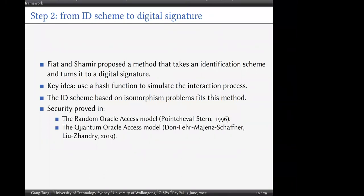That's the GMW protocol as our identification scheme. We then apply the Fiat-Shamir transformation to get a digital signature. Fiat-Shamir proposed a method to take an identification scheme and turn it into a digital signature. The key idea is to use a hash function to simulate the interaction process. The identification scheme based on the isomorphism problem fits this method. The security of the Fiat-Shamir transformation is proved in the random oracle model and, very recently, also in the quantum random oracle model.